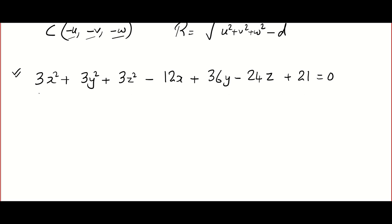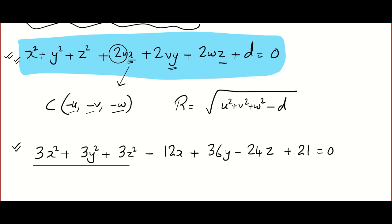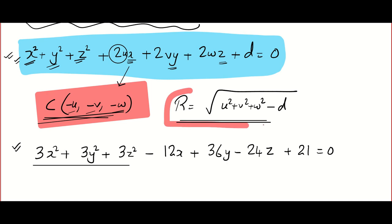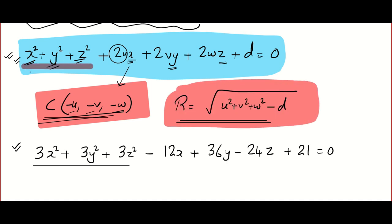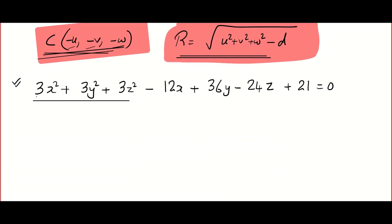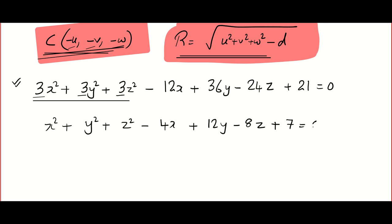I intentionally took this question because the general equation we learned has coefficients of x², y², z² equal to one. So if you plan to use the formula, you must always bring the given equation into standard form — divide throughout by 3. We get: x² + y² + z² − 4x + 12y − 8z + 7 = 0.